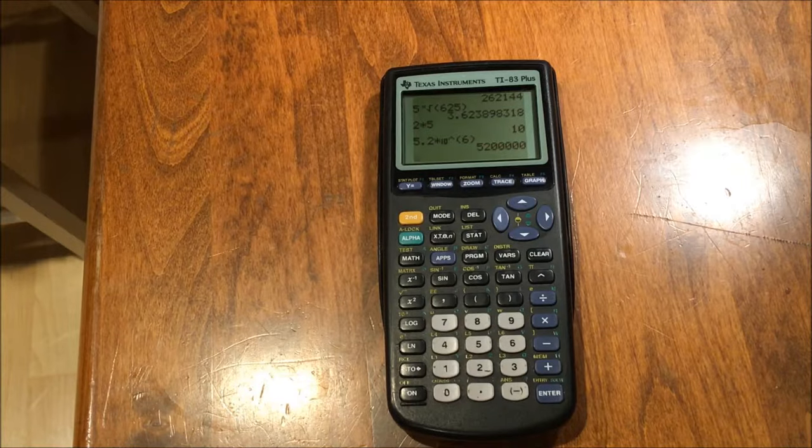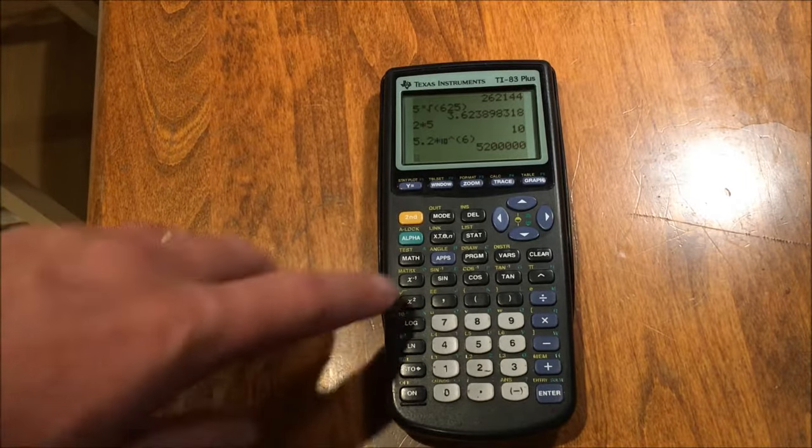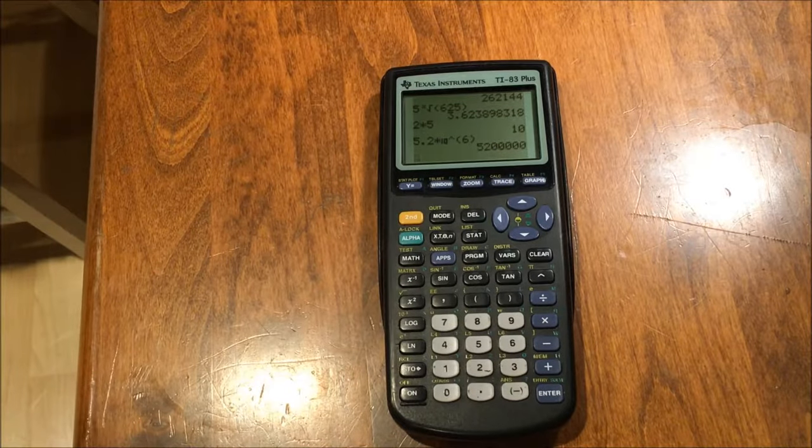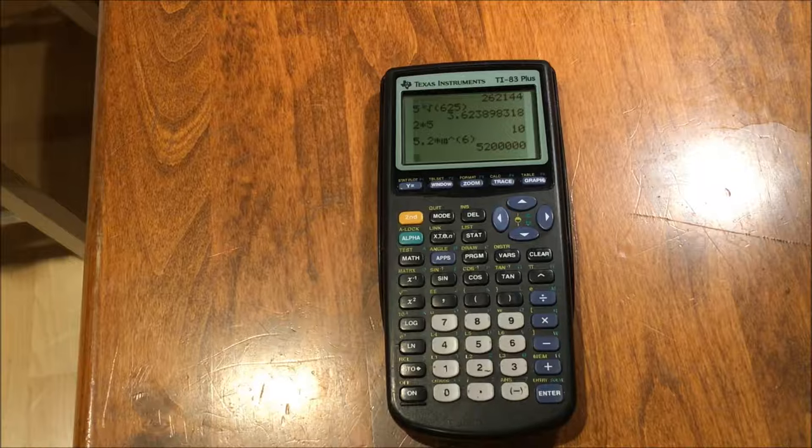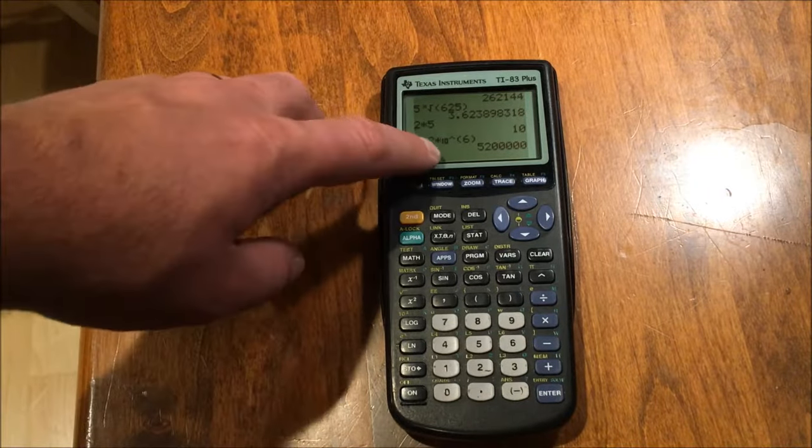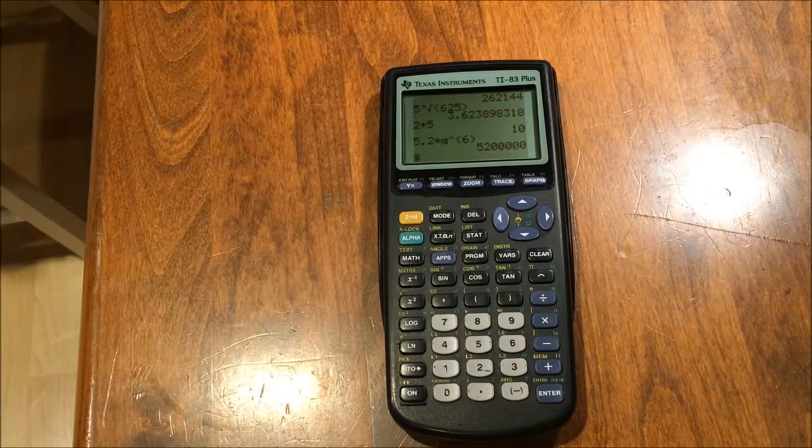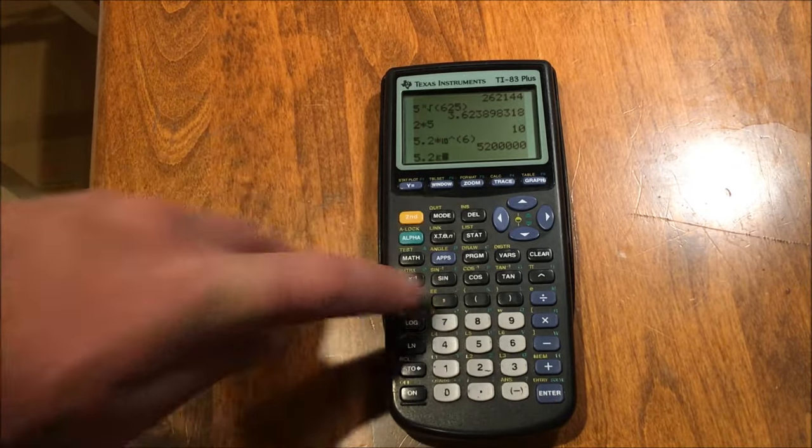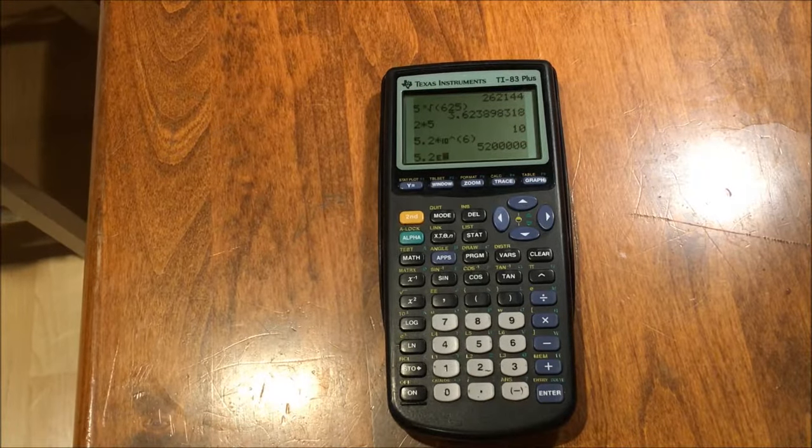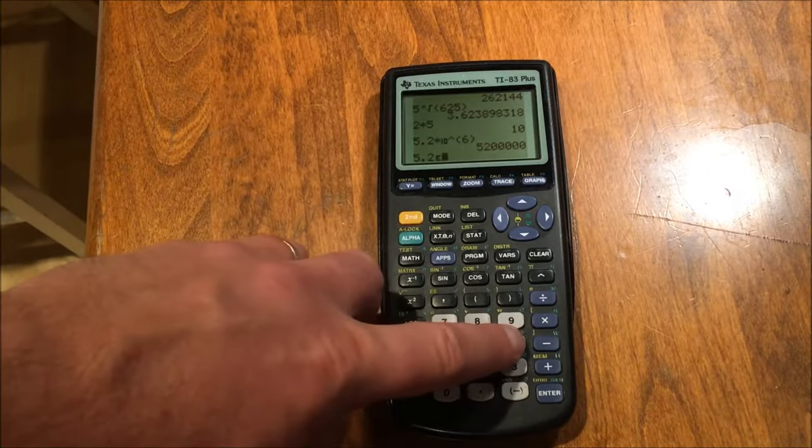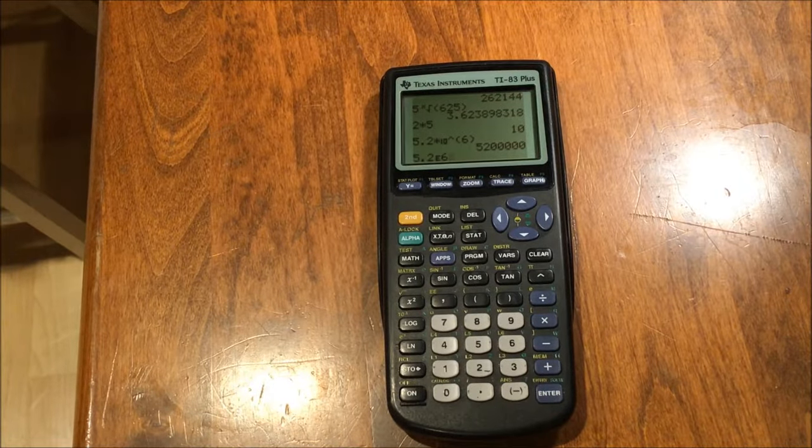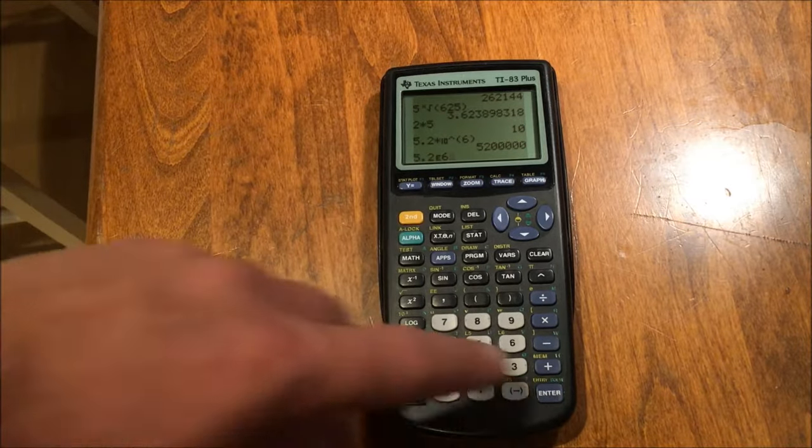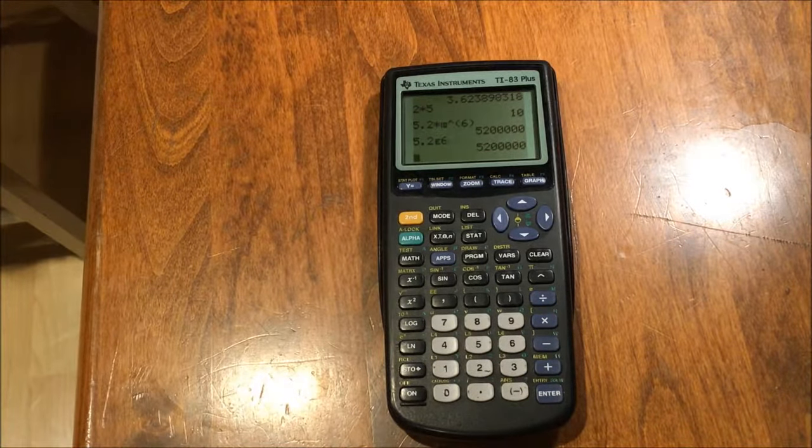There's actually a shortcut for scientific notation specifically, and it is the second to the comma, EE. I'm not sure what EE stands for, I apologize, but I do know that it works just like the times 10 to the button. So, if I do 5.2 and then press second comma, I get a little e. The next thing I will put is the exponent for the 10. So, that e really stands for times 10 to the, so 5.2 times 10 to the sixth, and I will get the same result as I did for the previous notation.